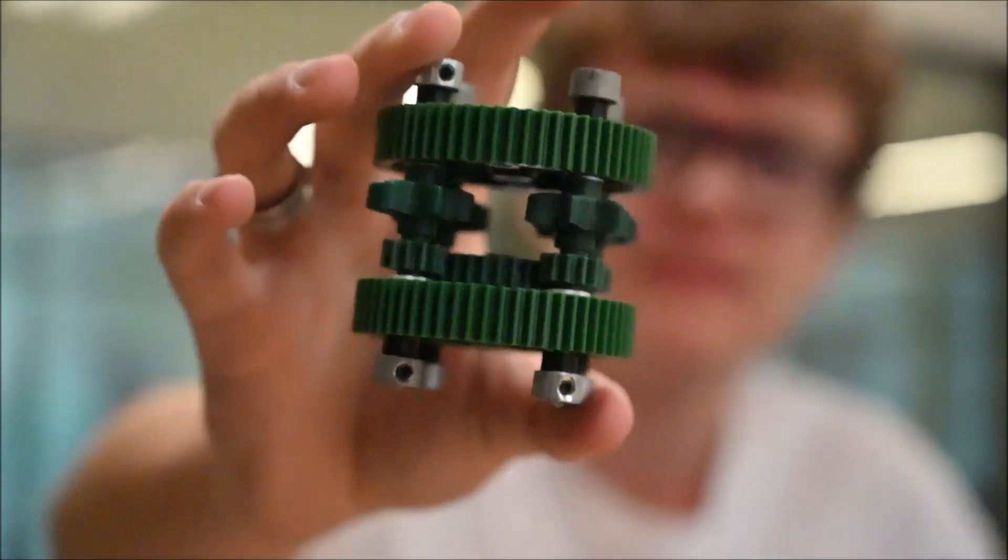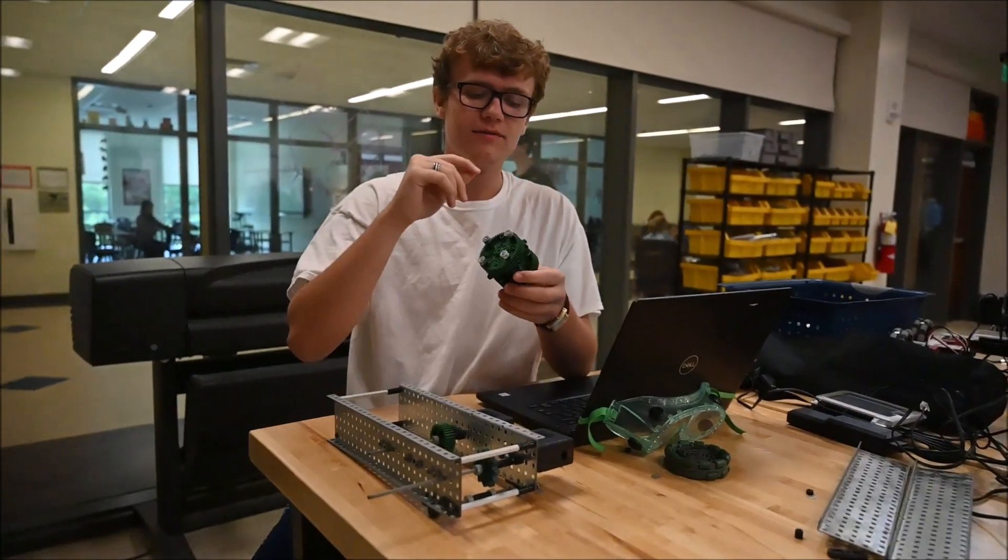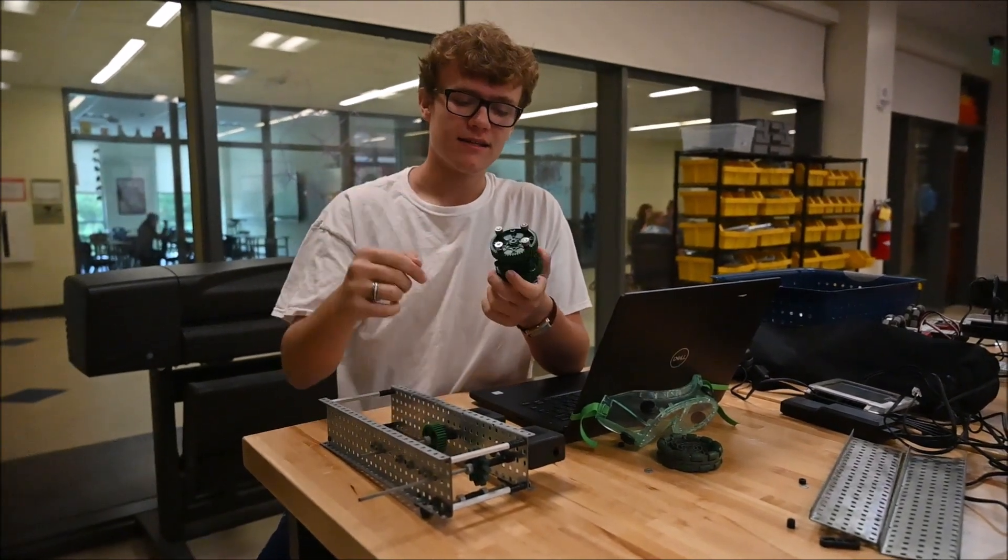So this is what the internals of the planetary gear set looks like. There are three different gears that we have in play here. We have the ring gear, the carrier gear, and the sun gear.